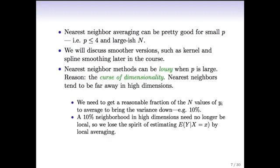There's a problem though: nearest neighbor methods can be really lousy when p is large. The reason has got the name 'the curse of dimensionality.' What it boils down to is that nearest neighbors tend to be far away in high dimensions. We need to get a reasonable fraction of the n values of yi to average to bring the variance down. Let's suppose we want 10% of the data points to be in each interval. The problem is a 10% neighborhood in high dimensions need no longer be local, so we lose the spirit of estimating the conditional expectation by local averaging.